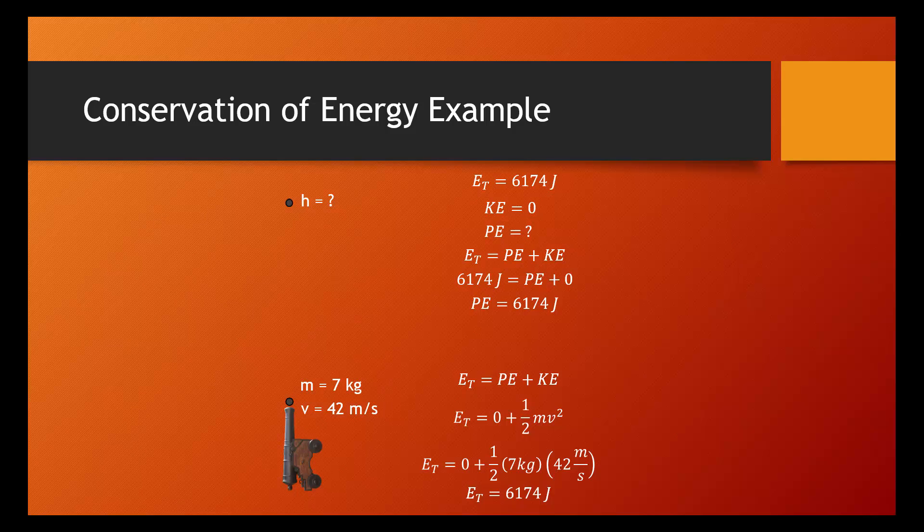Now we can go ahead and calculate the height. If we know the potential energy is 6,174 joules, and the equation for potential energy is MGH, we can substitute in our energy mass and the acceleration due to gravity, and figure out that the height of this cannonball is 89.9 meters.